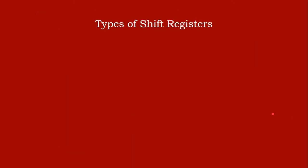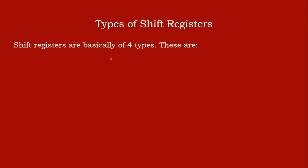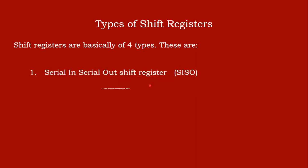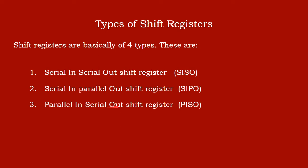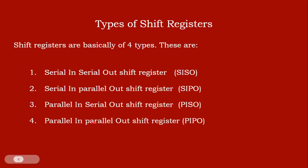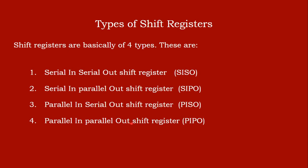Shift registers are basically of four types: Serial In Serial Out (SISO), Serial In Parallel Out (SIPO), Parallel In Serial Out (PISO), and Parallel In Parallel Out (PIPO). Depending upon how the data is input and how it is output, they are divided into these four categories.